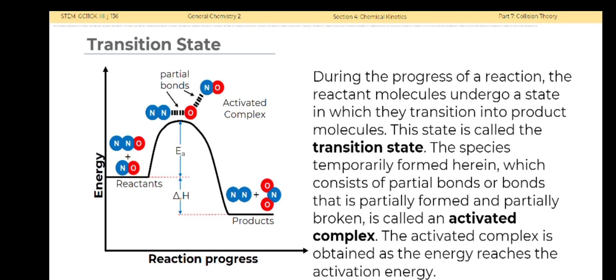During the progress of a reaction, the reactant molecules undergo a state in which they transition into product molecules. This state is called the transition state. The species temporarily formed herein, which consists of partial bonds or bonds that is partially formed and partially broken, is called an activated complex. The activated complex is obtained as the energy reaches the activation energy.